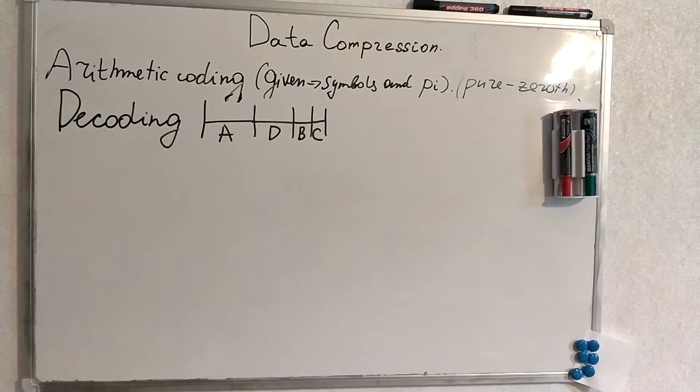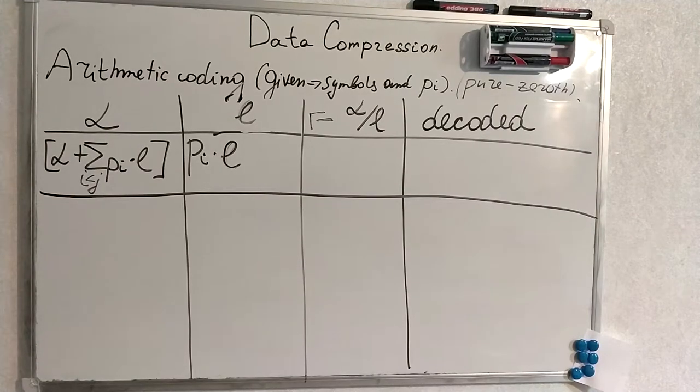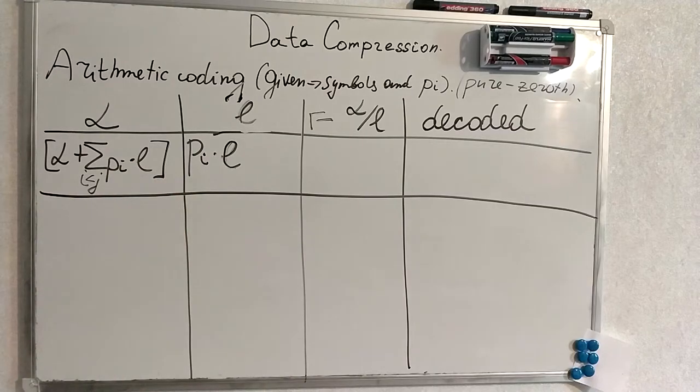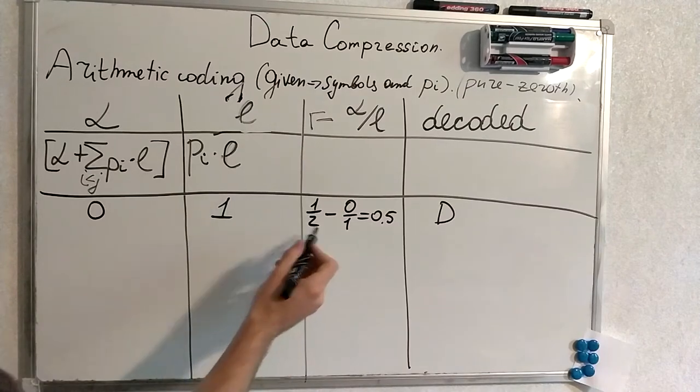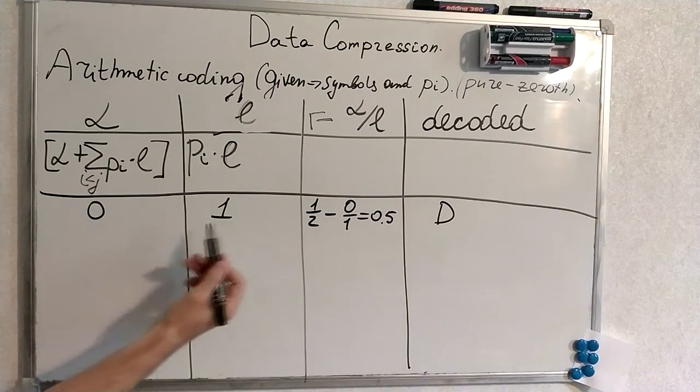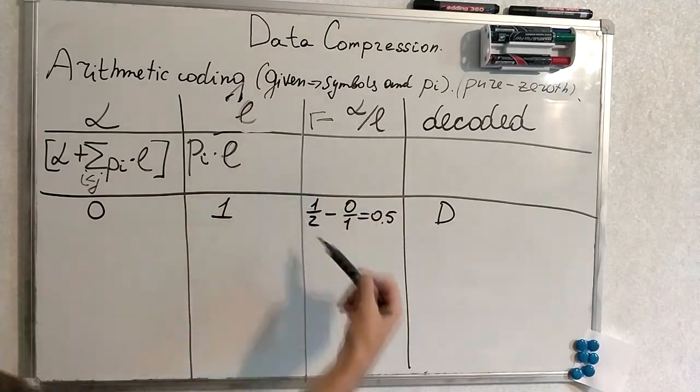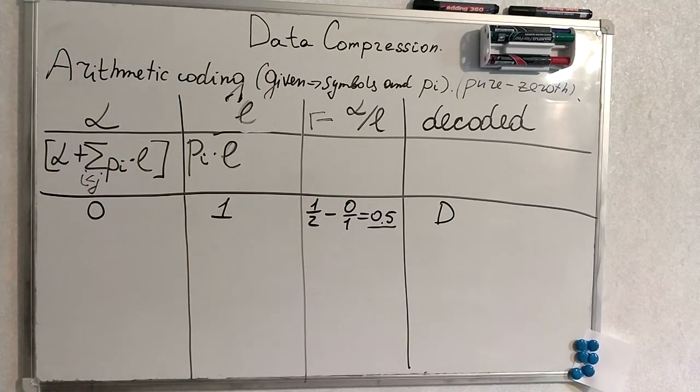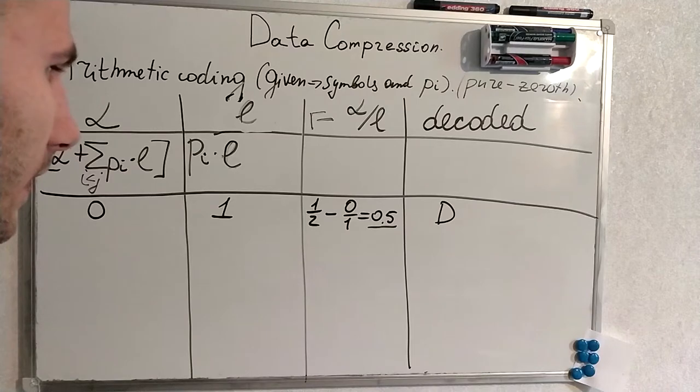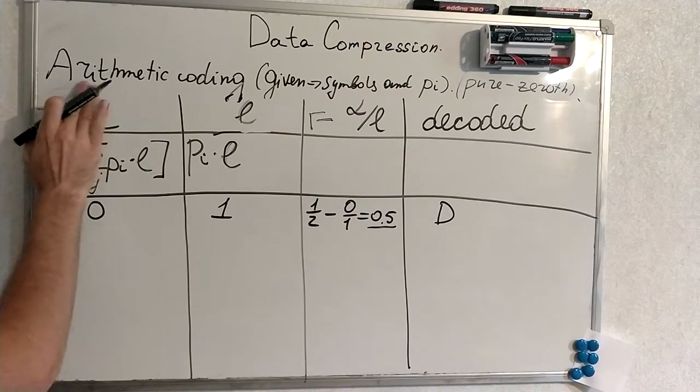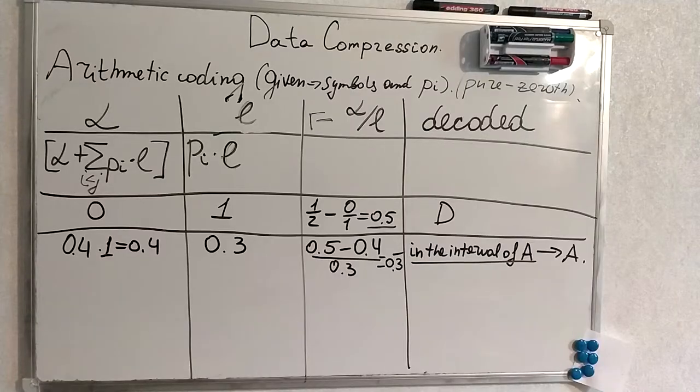Now we are going to try to decode what we produced. We will use this order and same probabilities. We are going to use this table with alpha, L, and decode it. I quickly remind you how to determine that. This is the first step. We know R. R is one half. We start from the interval 0 and the length 1. The decoded symbol will be decoded according to what we produce here. We have produced 0.5 here. To which symbol does this correspond. It corresponds to D because of ADBC. That corresponds to D.